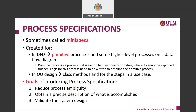What is the goal for producing a process specification? First, it can help to reduce process ambiguity — by looking at a correctly produced process specification, you can resolve uncertainties. Second, it helps to obtain a precise description of what is accomplished. Third, it is used to validate the system design.